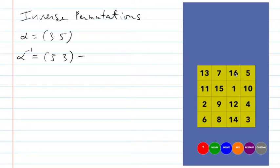Now, five, three — you can write permutations with any number first. So I could put the three first, and then you sort of cycle to the right and loop around. So for two cycles, the inverse is itself.